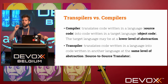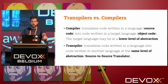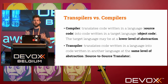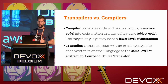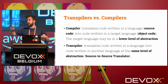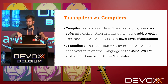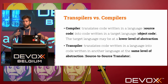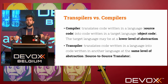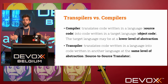The target language, when we talk about compilers, is thought to be at a lower level of abstraction — things like assembly or bytecode. A transpiler, on the other hand, translates code from one language to another at the same level of abstraction. It used to be called a source-to-source translator, but transpiler is quicker, so that's what we use today.